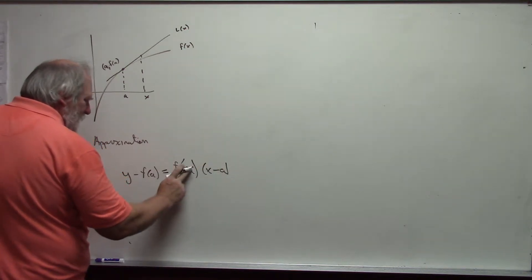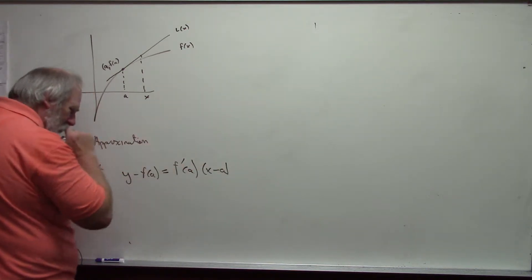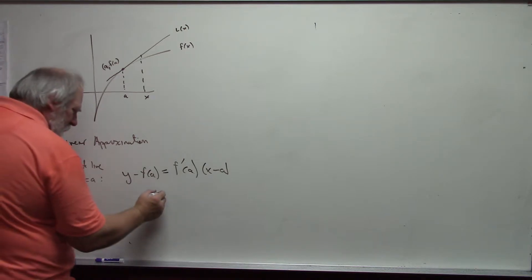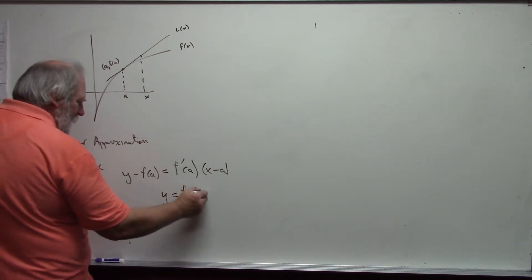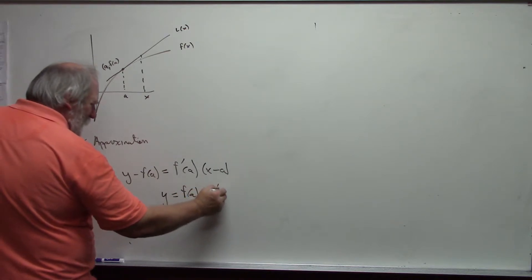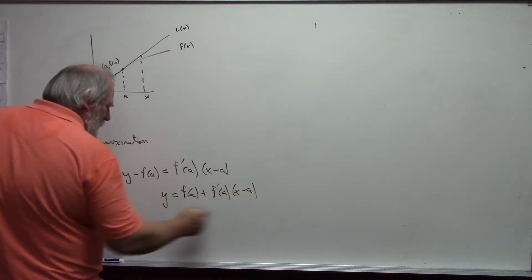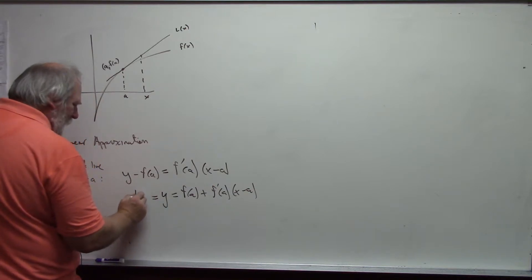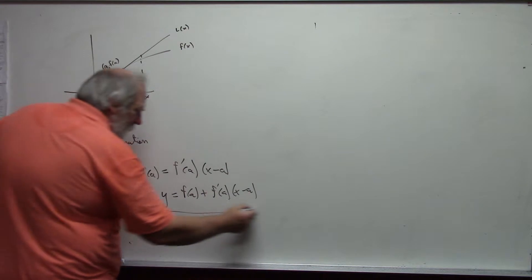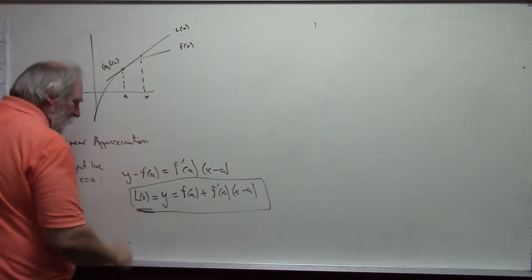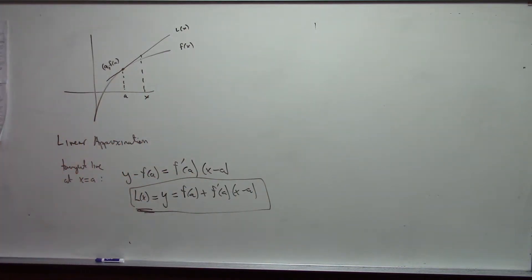This is the point-slope form. I will solve this for y, y being then f of a plus f prime at a times x minus a. This is called L of x, the linearization of my function.